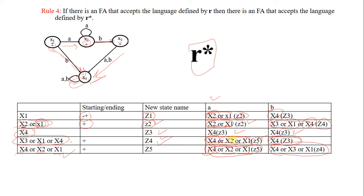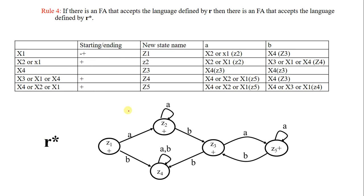We have now drawn the full table. Using this table you can draw the final diagram, which represents R star. The starting state is Z1, which is also an accepting state. The accepting states are Z2, Z4, and Z5. Z3 is not an accepting state. If you have any questions please write in the comment box — we will discuss more later. Stay tuned, and thank you for watching.